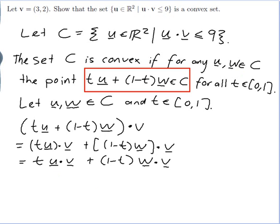So let's have a look at what we've got. u dot v. Well u is in my set so u dot v is less than or equal to 9. So this is less than or equal to t times 9.